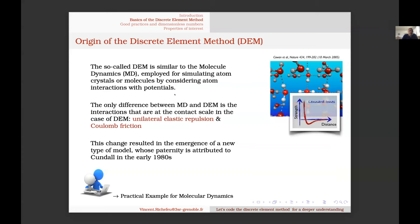A few words about the origin of the DEM. For me, the origin is molecular dynamics — a method that models molecules or atoms with interaction potentials like the Lennard-Jones potential, where the force between atoms or molecules derives from that potential. Then Cundall, in 1979, introduced unilateral contact between particles and Coulomb friction, transforming MD into DEM.